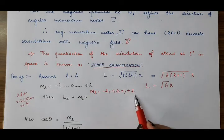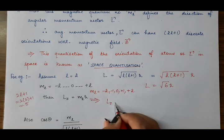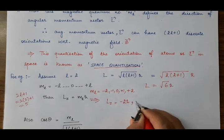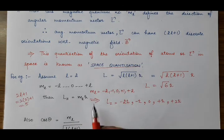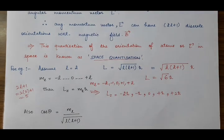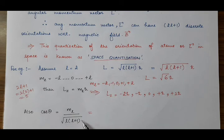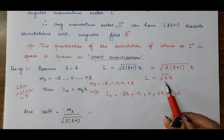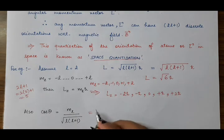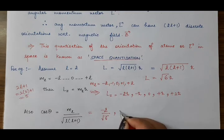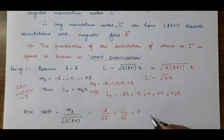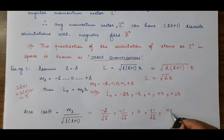Corresponding to these 5 values of ML, we will have 5 values of LZ: minus 2·h-bar, minus h-bar, 0, plus h-bar, plus 2·h-bar. And correspondingly, 5 values of cos theta. Since sqrt(l(l+1)) equals sqrt(6) in all cases, the 5 values of cos theta are: minus 2/sqrt(6), minus 1/sqrt(6), 0/sqrt(6), plus 1/sqrt(6), and plus 2/sqrt(6). From these you can find the 5 values of theta. For example, cos theta equals 0 gives theta equals 90 degrees.